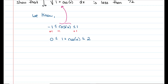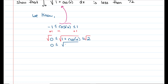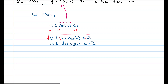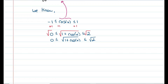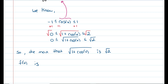Now we take the square root of everything. We get that 0 is less than or equal to the square root of 1 plus cosine of x, which is less than or equal to the square root of 2. This means the maximum that the square root of 1 plus cosine of x can be is square root of 2, and f of x is on the interval 0 to 1.